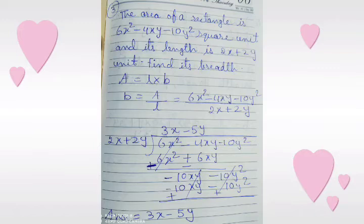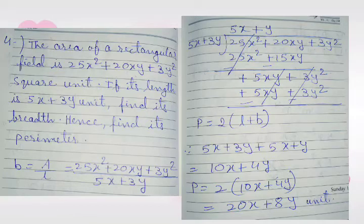Next, question number 4: The area of a rectangular field is 25x squared plus 20xy plus 3y squared units. If its length is 5x plus 3y units, find its breadth — and hence find its perimeter. So, breadth equals area divided by length.